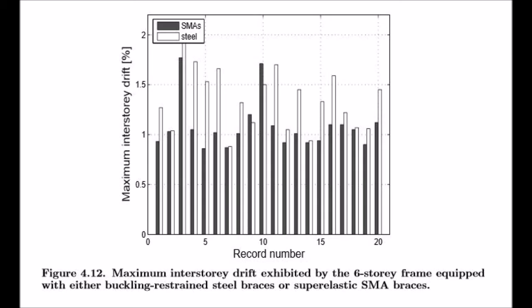In this figure, the same effect is shown as the shape memory alloy braces experienced an average maximum inter-story drift on a six-story frame of 1.08% compared to 1.35% for the buckling restrained steel braces.